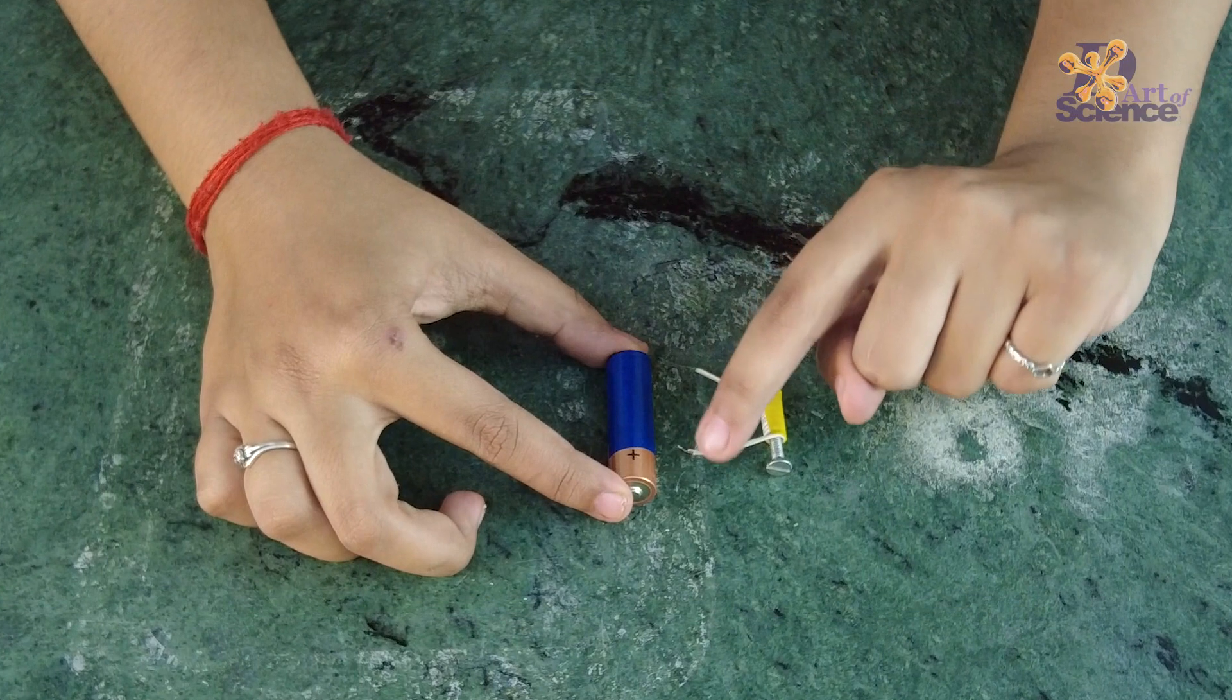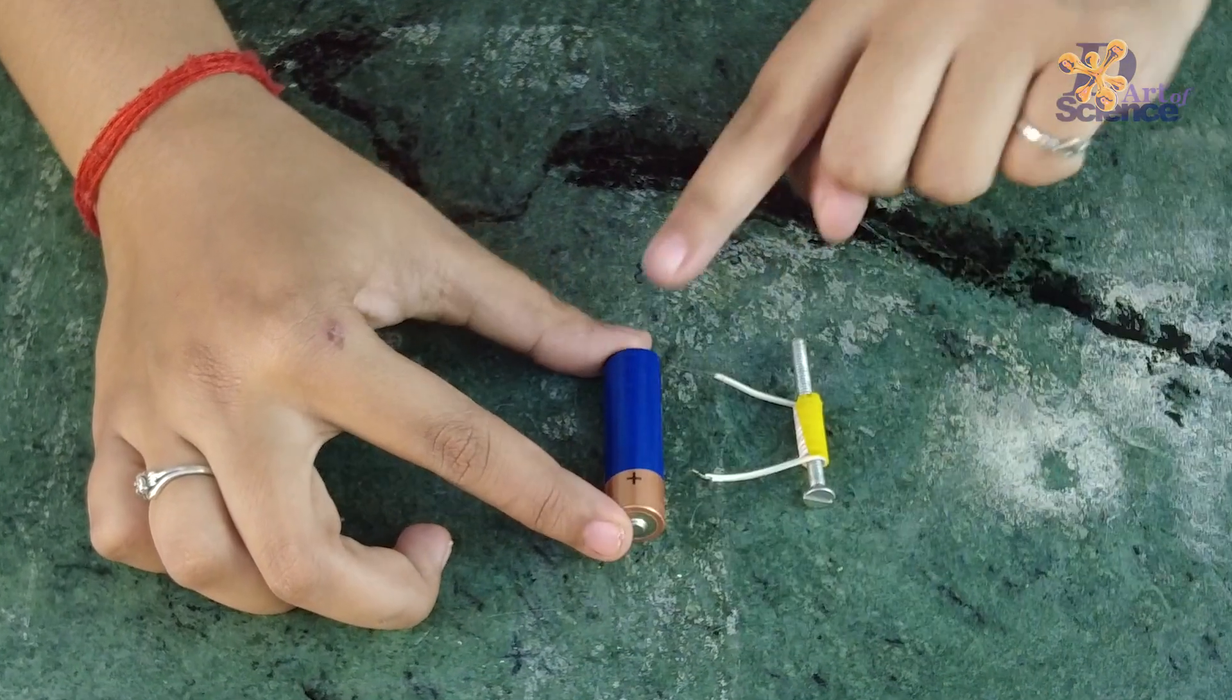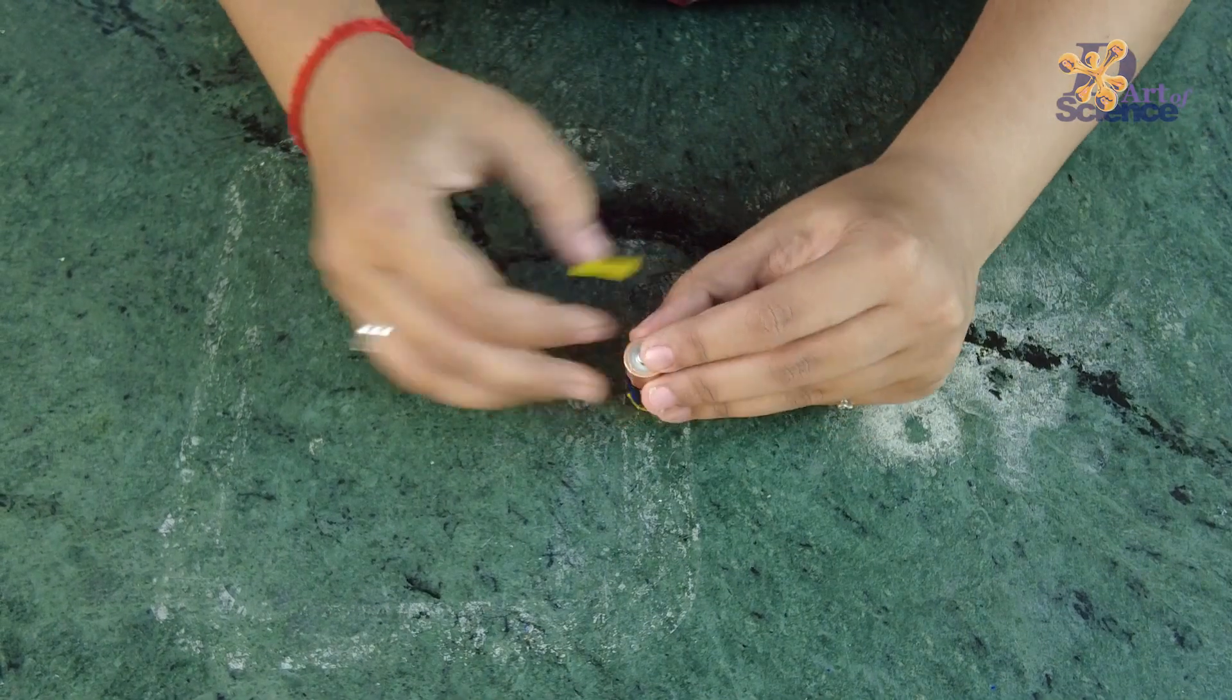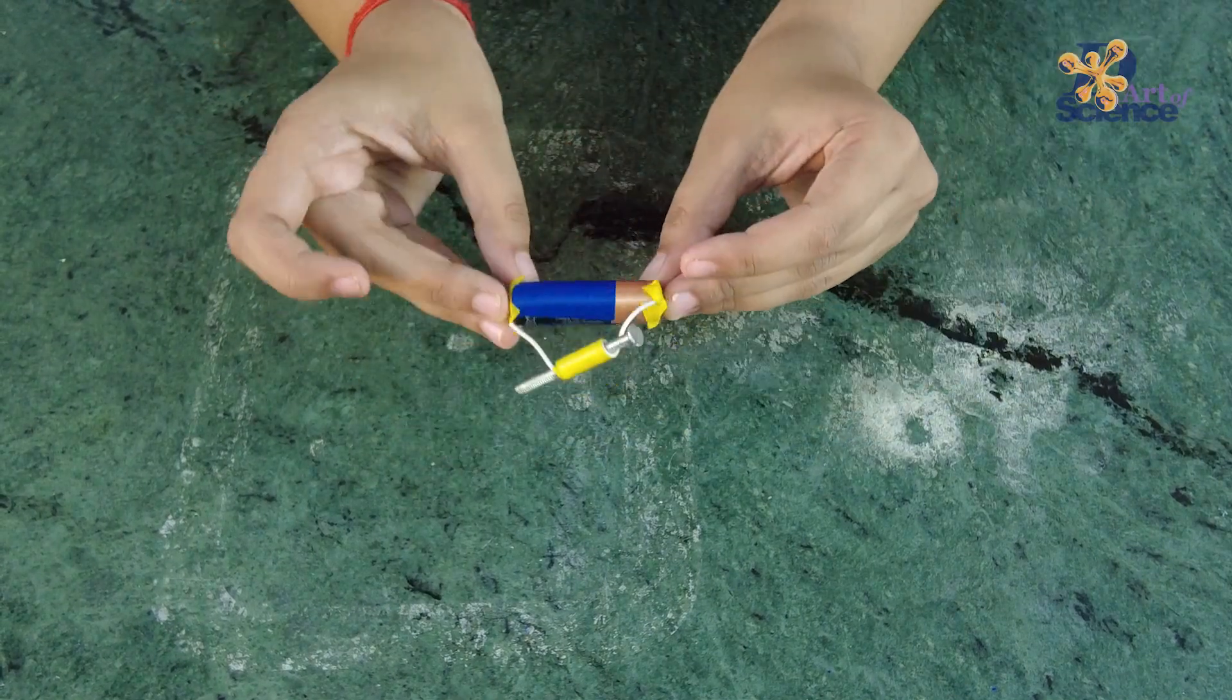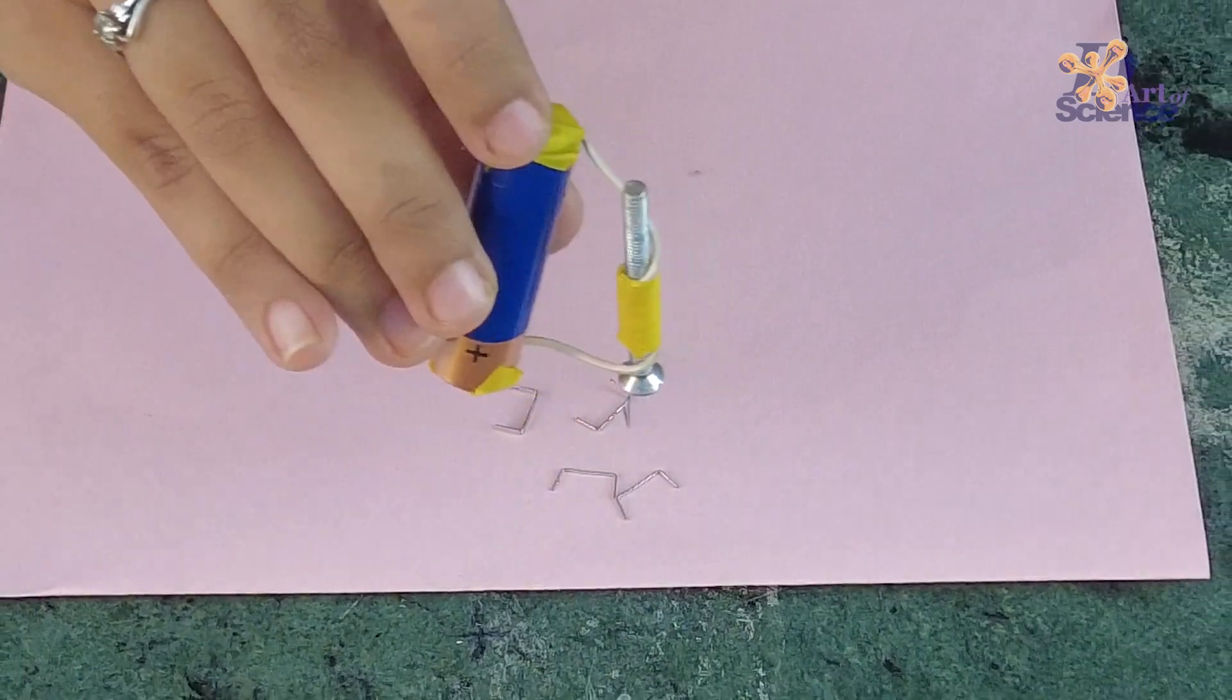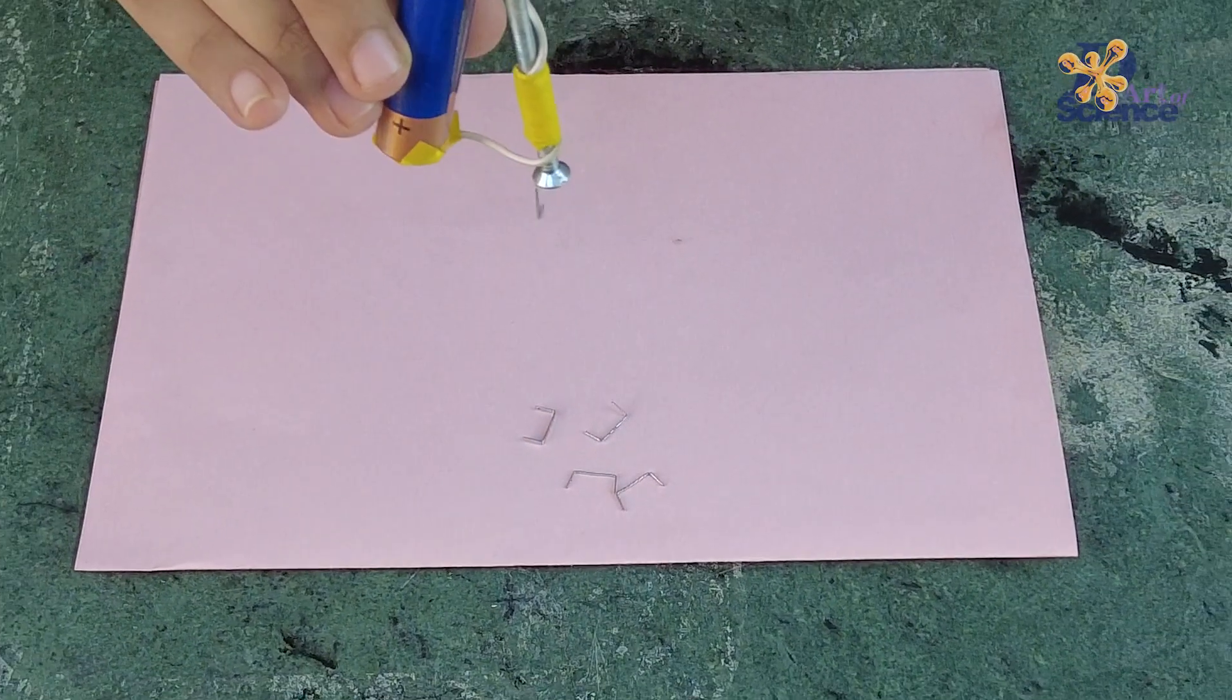Take a battery and tape the exposed part of the wires in the positive and negative terminal respectively. Take a few stapler pins and you will see that this piece of screw has now become temporarily magnetized.